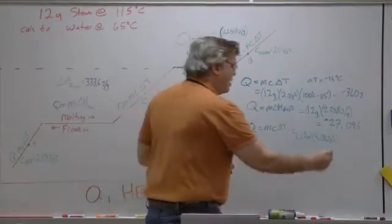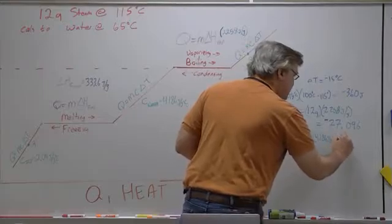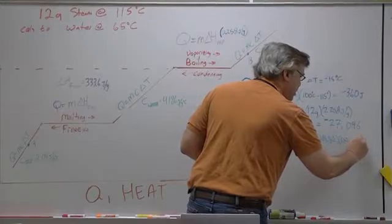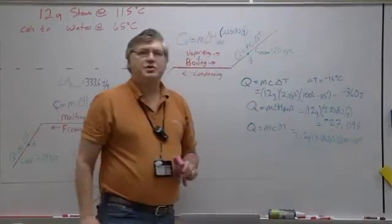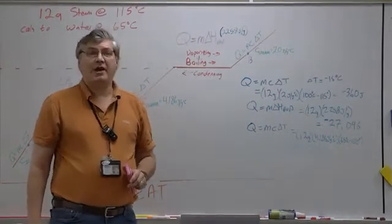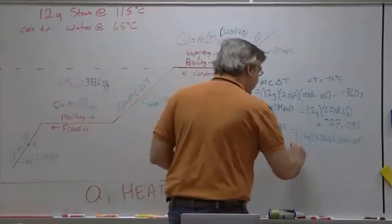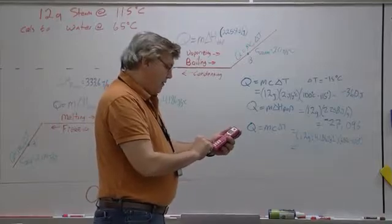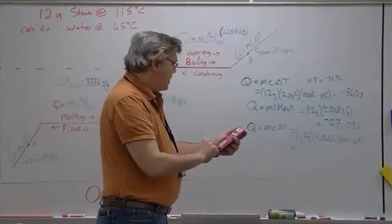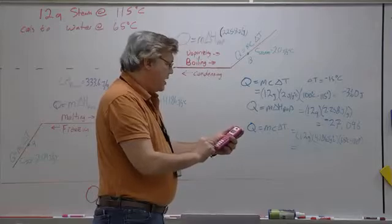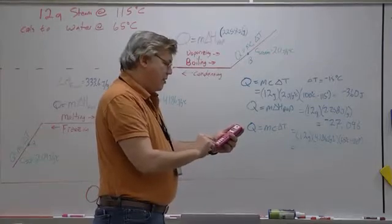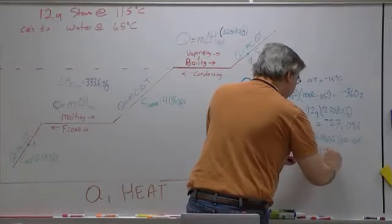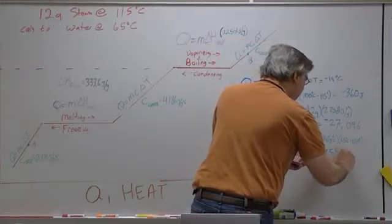And our delta T is 65 degrees Celsius minus the 100 that it started with, which means it's going to be a negative 35 degrees Celsius. That's how much it's cooling. So when I plug this into my calculator, I have 12 times 4.186 times a negative 35, and I get negative 1758.12.